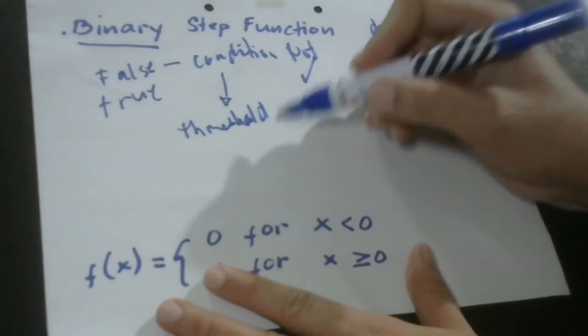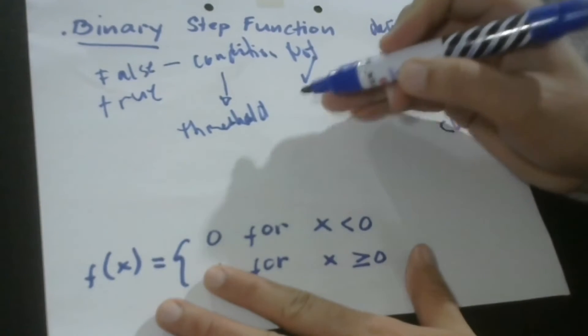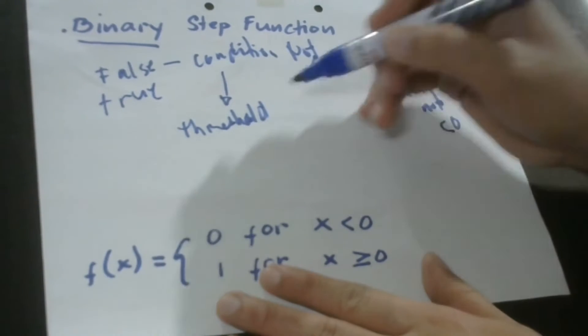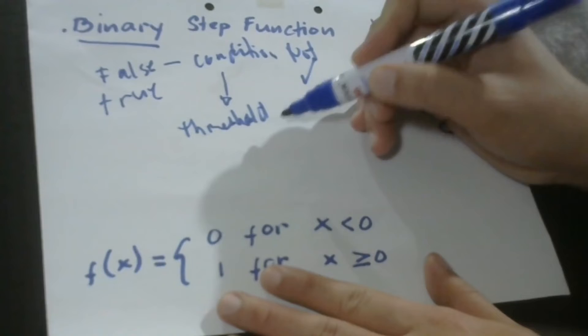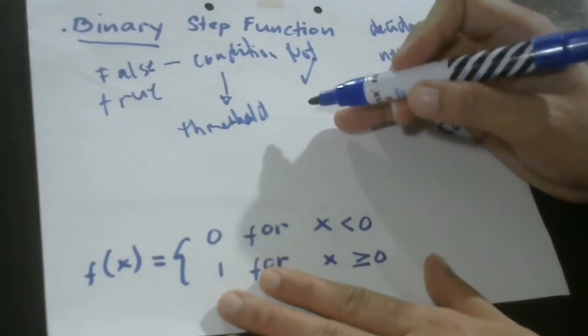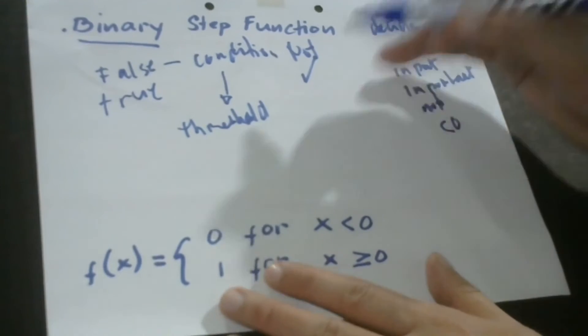Threshold. That means when a certain threshold is met, then that particular neuron will be activated, and when it is not met, then that particular neuron will be deactivated, meaning that a certain neuron will not pass to the next layer of the network.